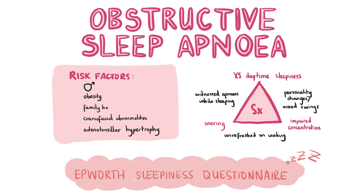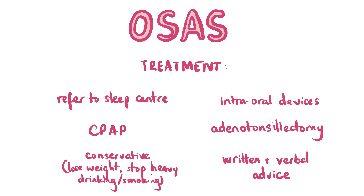In secondary care, a sleep study is performed to definitively diagnose the condition. Treatment is multifactorial. Refer to a sleep centre for confirmation of the diagnosis and for secondary care treatments like CPAP. While waiting for an appointment in secondary care, conservative management options can be used: encourage the patient to lose weight, exercise, reduce alcohol intake, and stop smoking. They should also be advised to sleep on their side. Give the patient written and verbal information about OSA as well as information about support groups like the Sleep Apnea Trust.